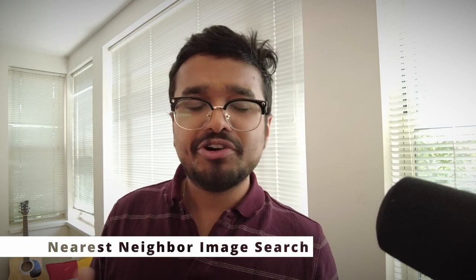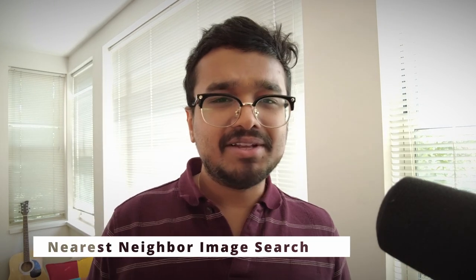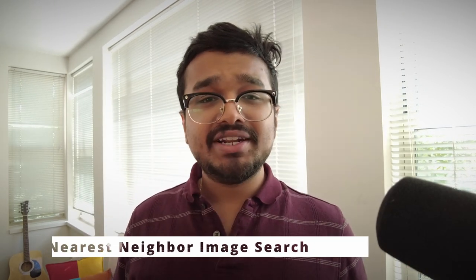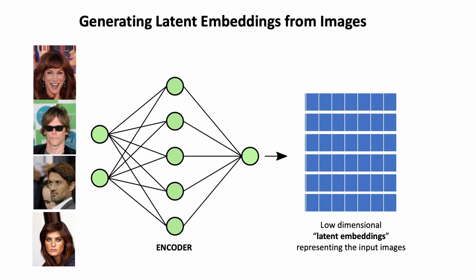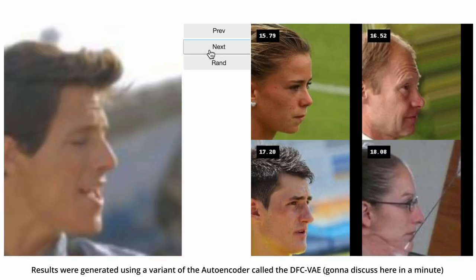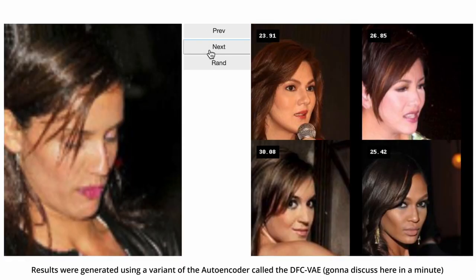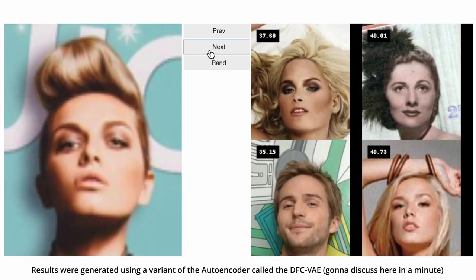One common way people use embeddings, other than compression, is to do nearest neighbor or reverse image search. For example, here I've trained an autoencoder on a dataset of celebrity faces and generated the latent embeddings of all images in the database. The latent embedding is generated simply by passing the input image through the encoder and retrieving the compressed representation. Now I can input a new image and find the K most similar images from the database of latent embeddings.